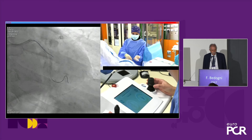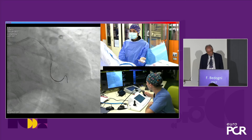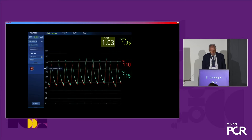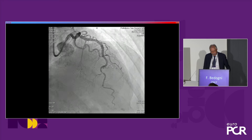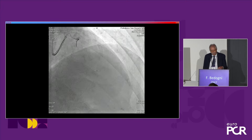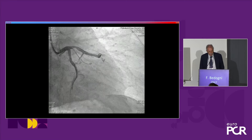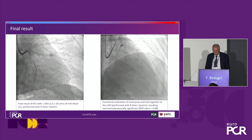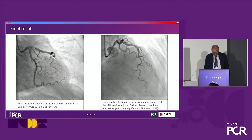We go again through the stent to measure the final FFR beyond the stent — it is 1.0, absolutely normal. A perfect result. We have angiographic images and functional images in both vessels. We finish by measuring the FFR in the proximal ostial LAD — it is 0.98, normal. This is the final result with the functional evaluation of both branches of the circumflex and the LAD.